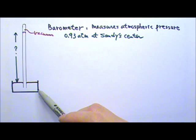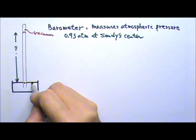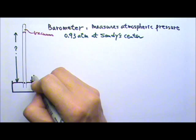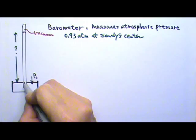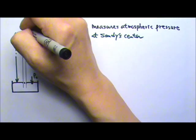After the mercury reaches an equilibrium and it stops flowing, the pressure here and here must be the same. The pressure here is the atmospheric pressure because it's exposed to the atmosphere. The pressure here comes from the pressure on the top plus the pressure from the mercury column.